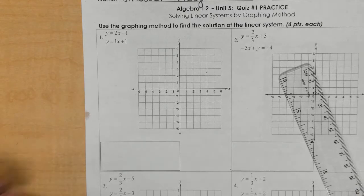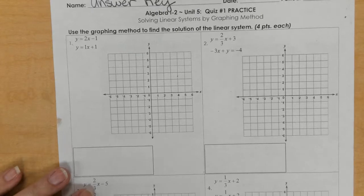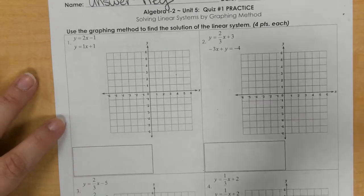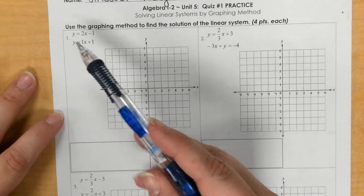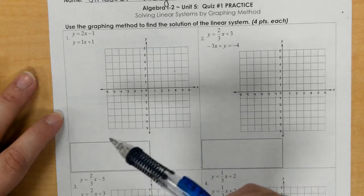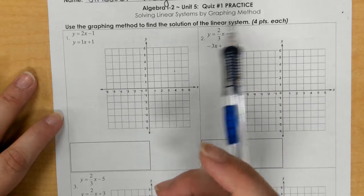For quiz number 1 practice for unit 5, it's over the graphing method. For number 1, it says use the graphing method to find the solution of the linear system. They are worth 4 points each.